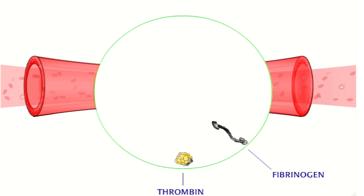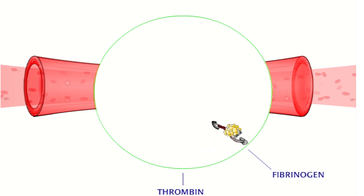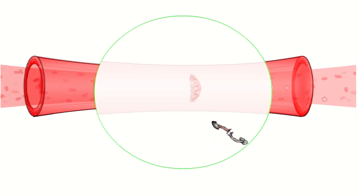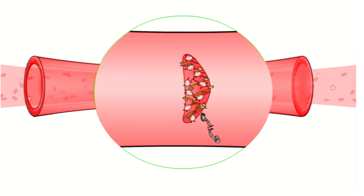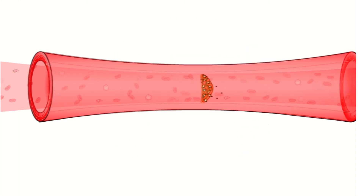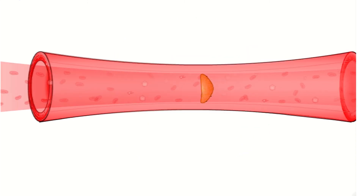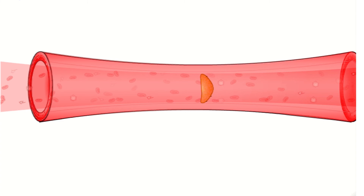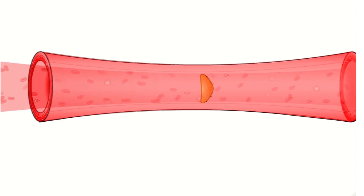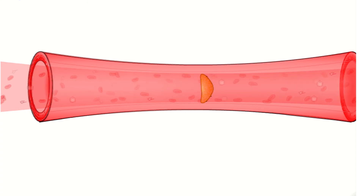Activated thrombin then snips small pieces off another protein called fibrinogen. When lots of fibrinogen is cut, the pruned molecules cover the platelets and stabilize the clot. To form a stable clot, all the molecules in the cascade must be present and properly shaped.